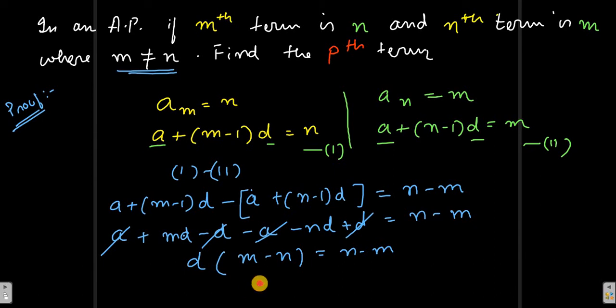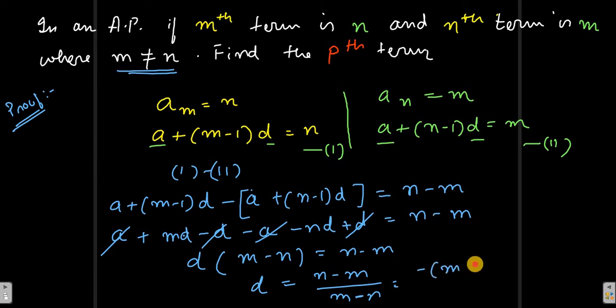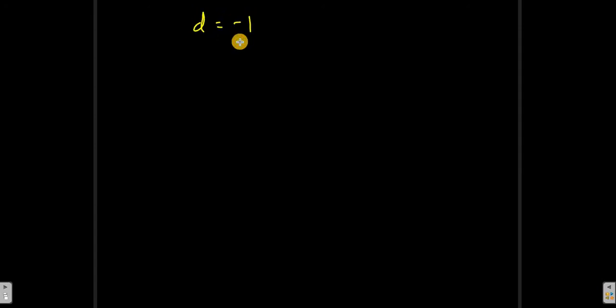From here, d equals (n minus m) divided by (m minus n). Taking out a minus from the numerator, we get minus (m minus n) divided by (m minus n), which cancels out. So d equals minus one.